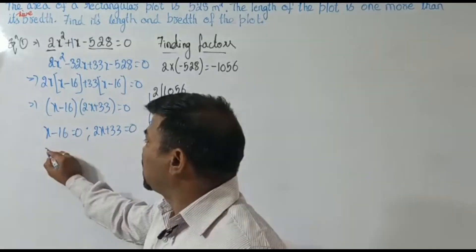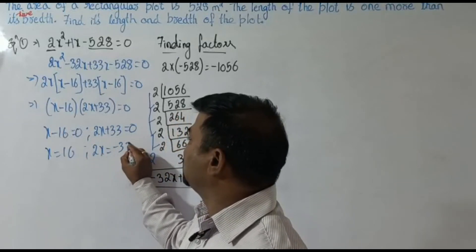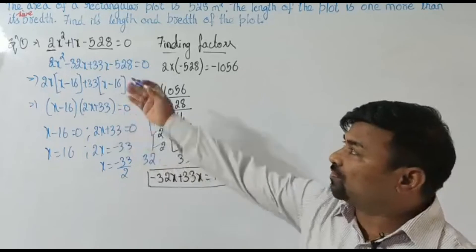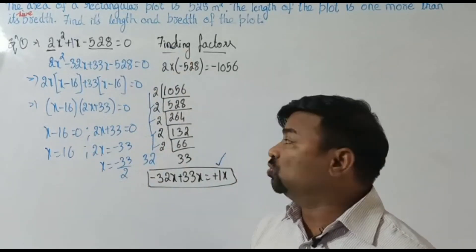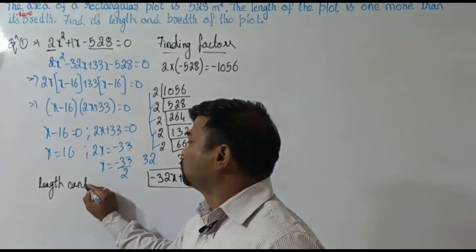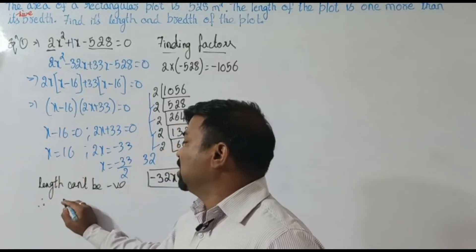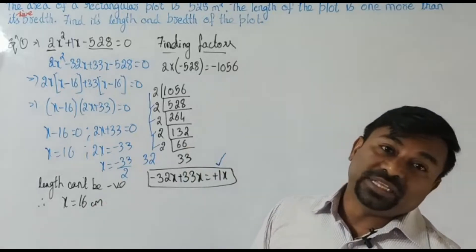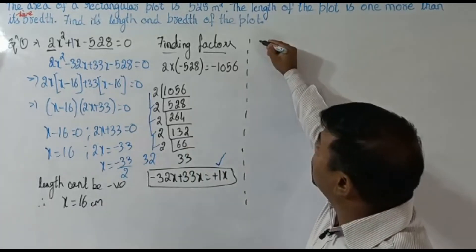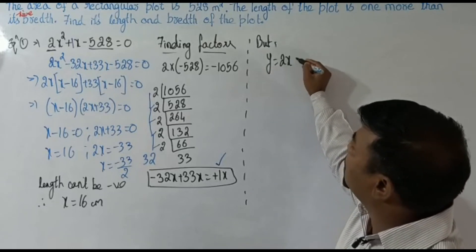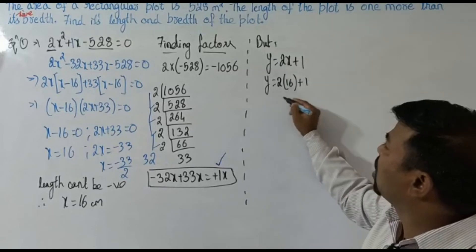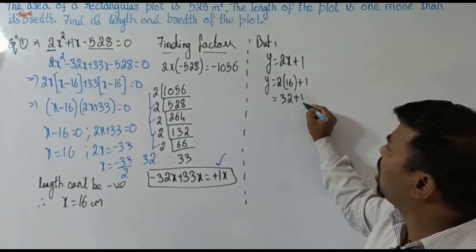Applying the zero product property: x minus 16 equals 0, giving x equals 16; or 2x plus 33 equals 0, giving x equals minus 33 by 2. Since length can't be negative, we take x equals 16. Now finding y: y equals x plus 1 equals 16 plus 1, wait — using y equals 2x plus 1 gives y equals 2 into 16 plus 1 equals 32 plus 1 equals 33.